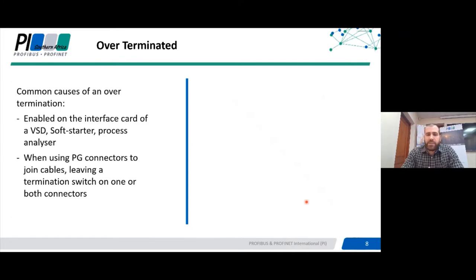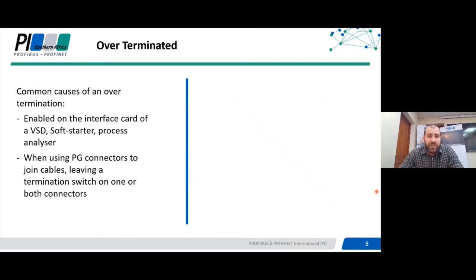Just as bad as an under-termination, if not actually worse, is something called an over-termination. Each segment should have two terminations per segment. If there are more than two terminations enabled or the terminations are enabled at the wrong point, the system would be subject to what I refer to as the segment being over-terminated. From experience, a common place where over-termination is unintentionally enabled is within VSDs, soft starters, and some process analyzers.